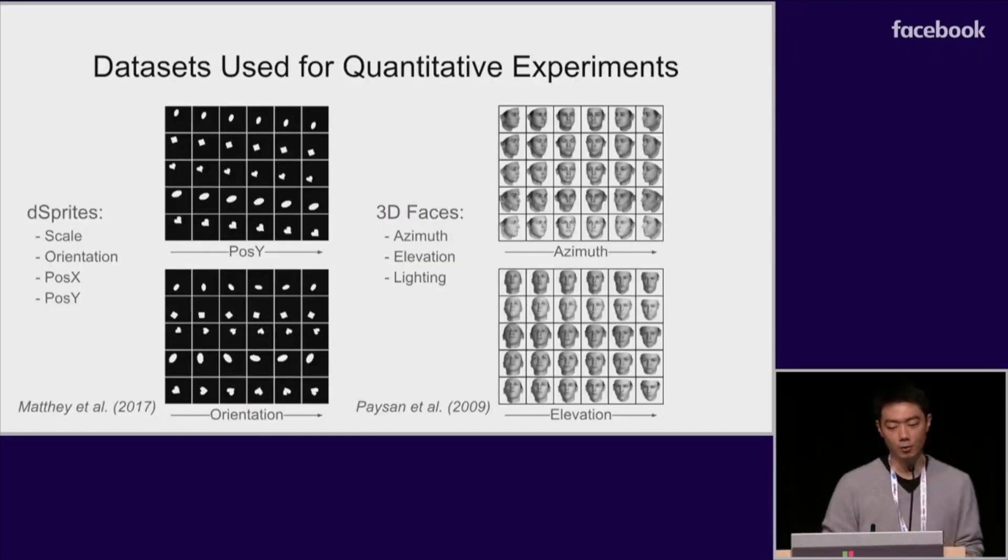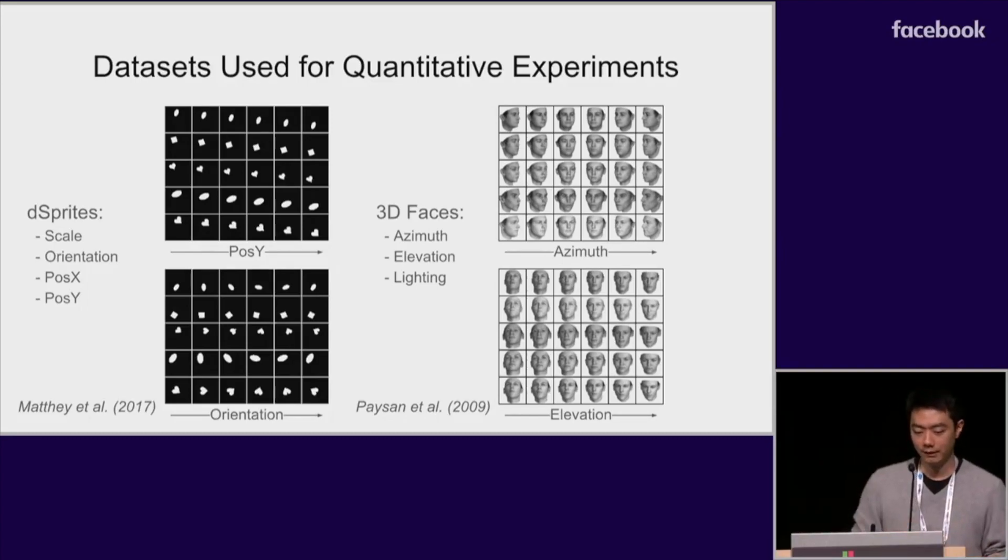Alright, so we first did some quantitative experiments using synthetic datasets with some known ground truth factors. The first dataset is these sprites from Mathey et al. This is a dataset consisting of images of a single 2D object with known factors such as the position, scale, and orientation. The second dataset is a collection of synthetic faces with different poses and lighting conditions.